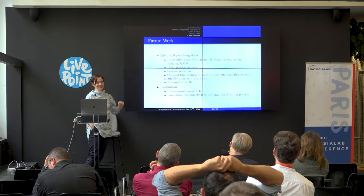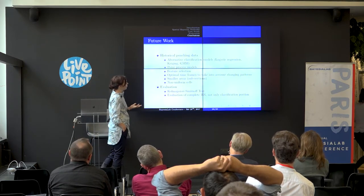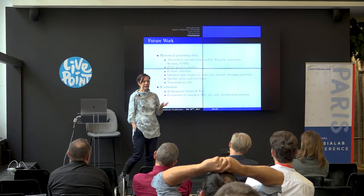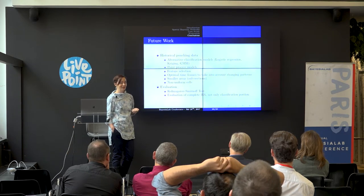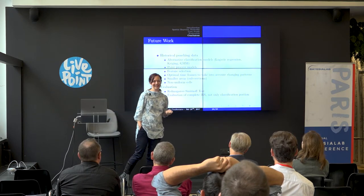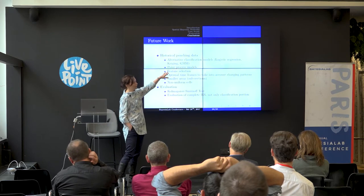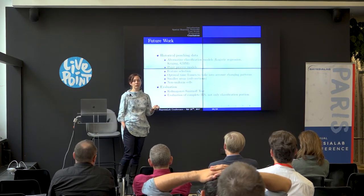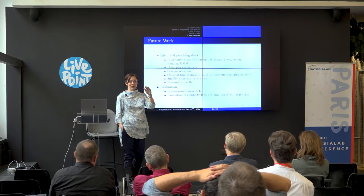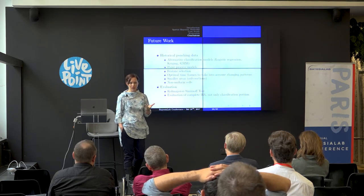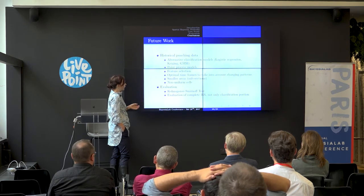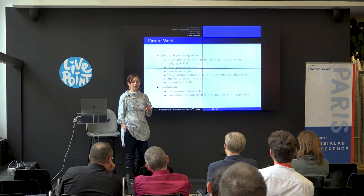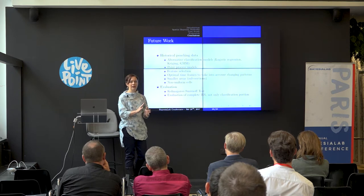I have many items for future work: implementing BayesiaLab, looking at alternative classification methods — specifically Gaussian processes or Kriging, which is by the way a South African-invented method named after a person called Danie Krige. We also want to look at point processes, better feature selection, smaller areas and non-uniform cells — because it doesn't really make sense to have your grid in square kilometer cells, it's not a natural manifold. For evaluation, we want to look at the Kolmogorov-Smirnov test, which is a really good non-parametric test to check if your model matches your data behavior.